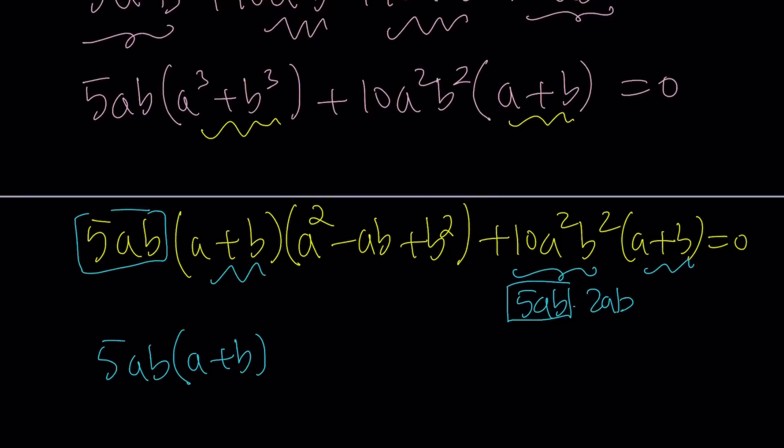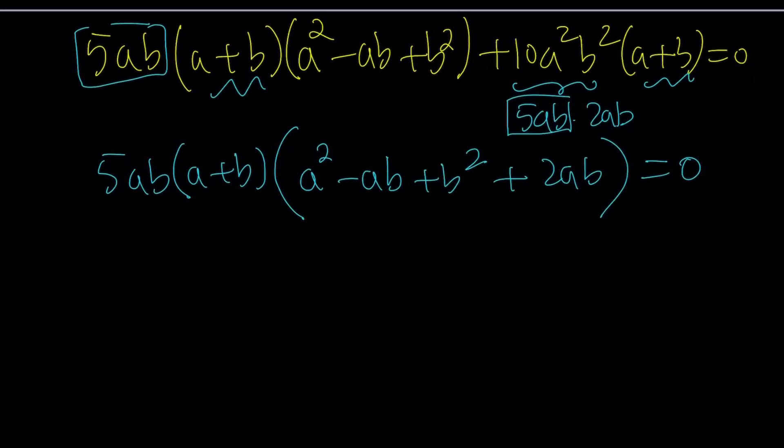All right. Now, if we open up another parentheses, the stuff inside the parentheses is going to be a squared minus ab plus b squared plus 2ab. To be or not to be. Anyways, so these are the factors, but let's simplify the third one. 5ab, a plus b. I can combine like terms negative ab and 2ab make 1ab. So a squared plus ab plus b squared equals zero. Great. So our expression was completely factored.